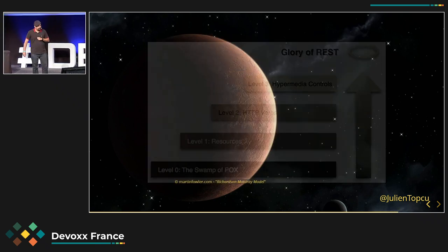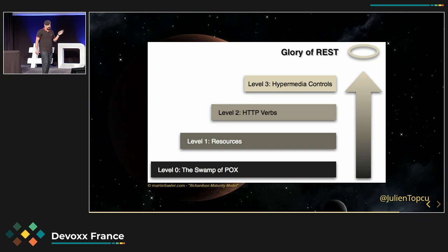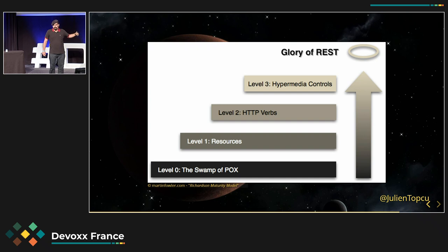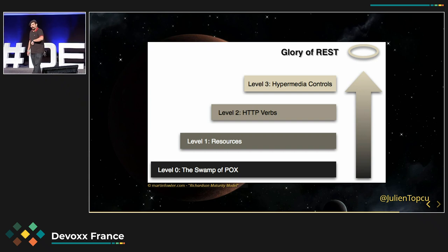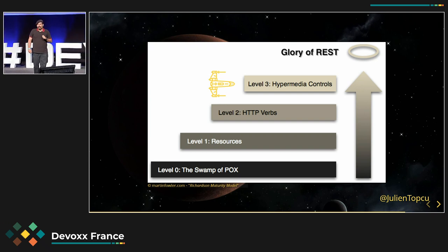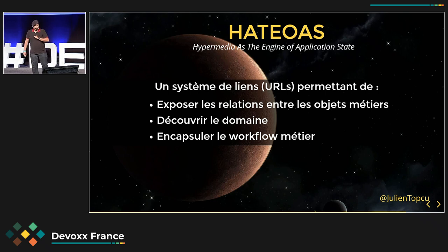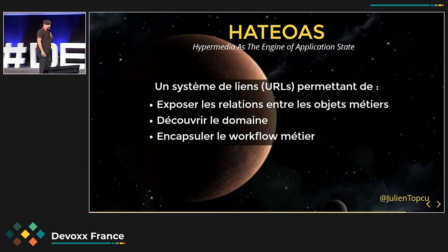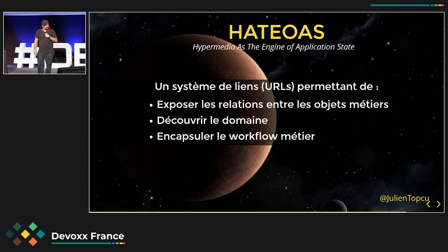Pour ça, il faut parler du modèle de maturité de Richardson. C'est une classification des applications REST avec quatre niveaux. Niveau zéro, vous n'êtes pas REST, vous faites du RPC. Level 1, vous organisez en ressources. Niveau 2, on utilise les verbes HTTP pour gérer le cycle de vie de la ressource — POST, PUT, DELETE, GET. Et là, on s'est tous arrêtés là. Pourtant, il y a un niveau au-dessus qui s'appelle les hypermédia contrôles — et c'est là qu'on va trouver la solution. Les hypermédia contrôles, c'est ce qu'on appelle aussi HATEOAS : Hypermedia As The Engine Of Application State. Si on se concentre sur « Engine of Application State », ça sonne gestion du comportement. C'est un système d'URL qui va vous permettre d'exposer des relations entre les objets métiers, de découvrir votre domaine et d'encapsuler votre workflow métier.